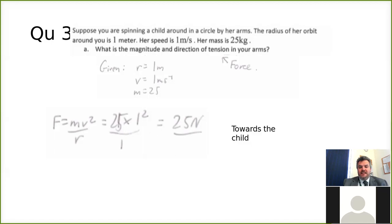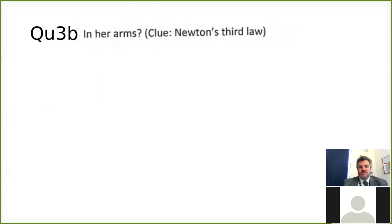Which brings me neatly onto the next part of the question, 3b, which is what's the force in her arms? Well, it's Newton's third law of motion. Every action has an equal and opposite reaction. So if you've got 25 newtons towards the girl or away from you, then the tension in the girl's arms is going to be towards you and it'll be 25 newtons. So it's equal and opposite.